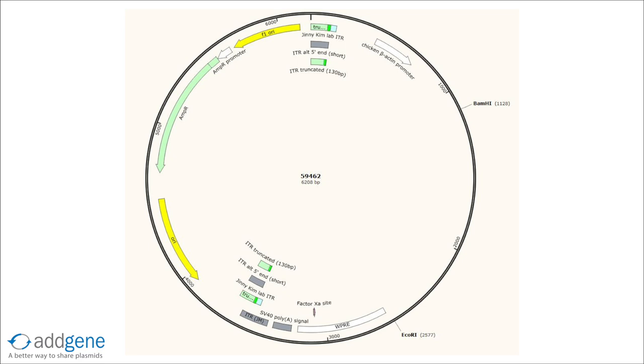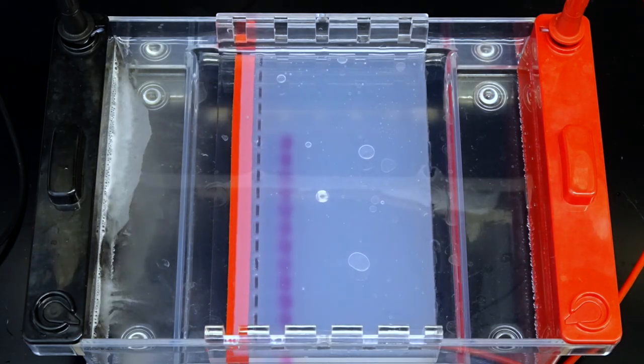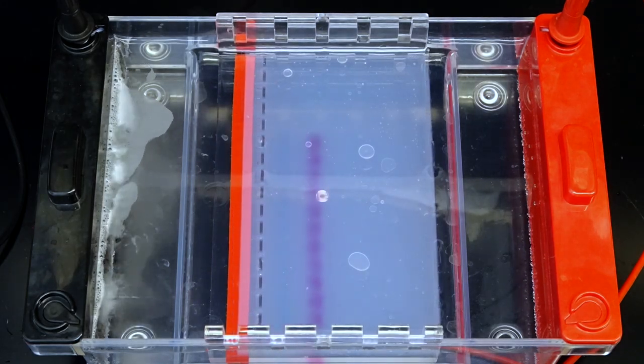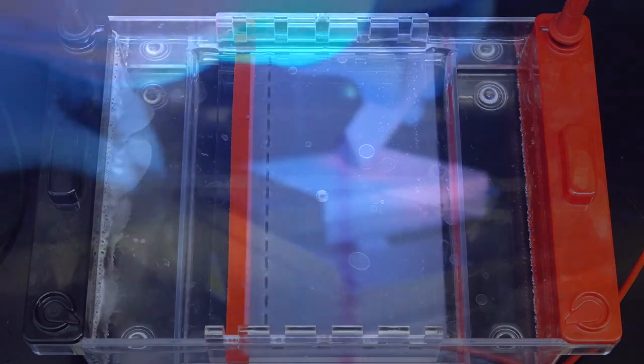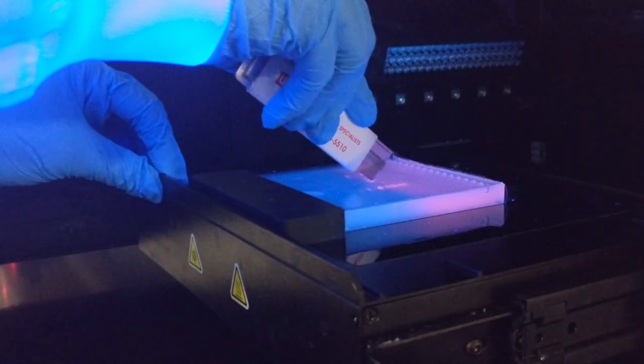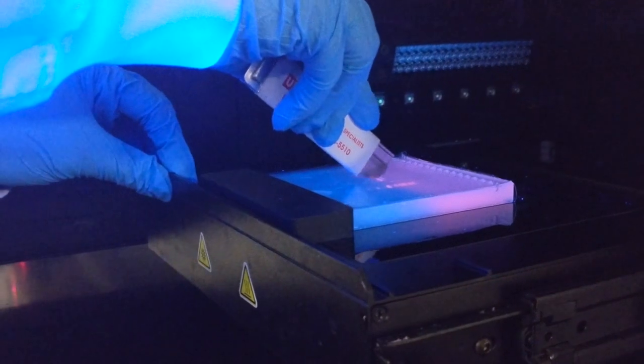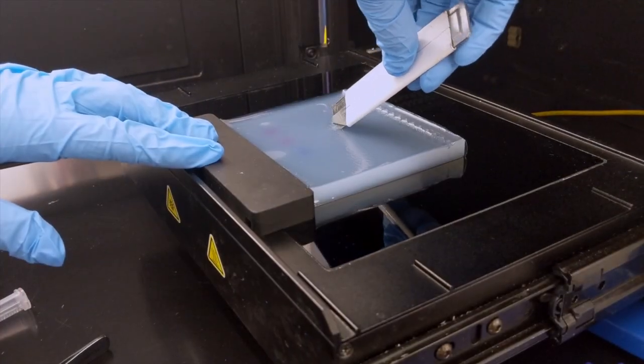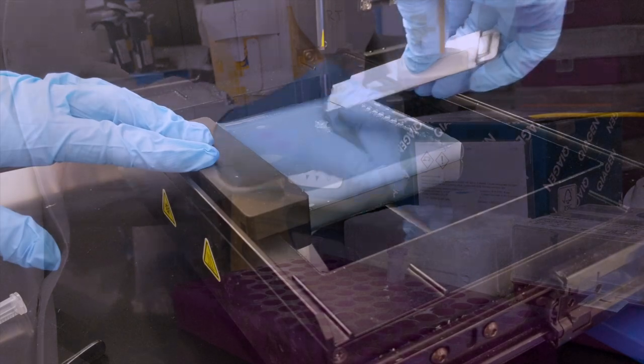Since we know our plasmid sequence, we can pick enzymes that cut our DNA at specific locations to generate fragments of a known size. We can then run these fragments on an agarose gel alongside a DNA ladder of known sizes and determine which fragment we want based on where it runs in the gel. By extracting only the band of the desired size, we isolate our desired product from the rest of the plasmid backbone.